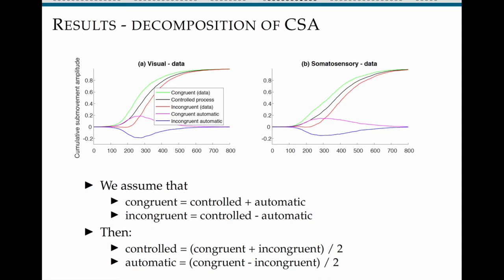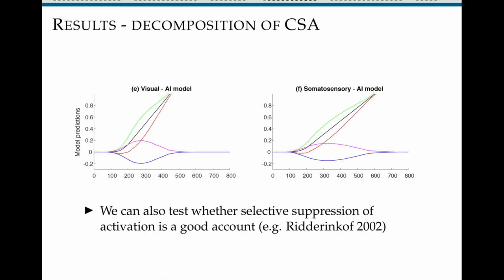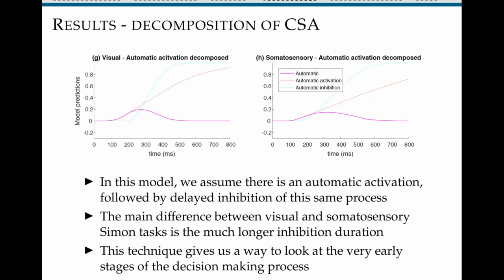We can also fit these extracted process time courses to specific computational models proposed in the literature — for example, a suppression-of-activation model — where an inhibitory process acts on the automatic activation. Fitting the model to the data allows us to evaluate which theoretical account best explains the temporal dynamics observed in both the visual and tactile Simon conditions.